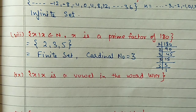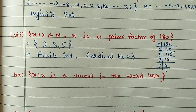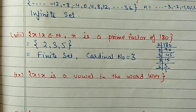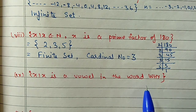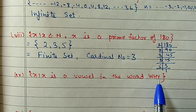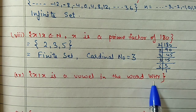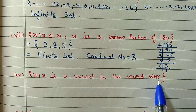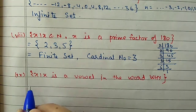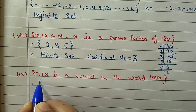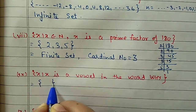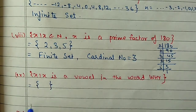Part (ix): {x such that x is a vowel in the word Y}. The vowels are A, E, I, O, U, and the word Y does not contain any of these letters. So this is an empty set.